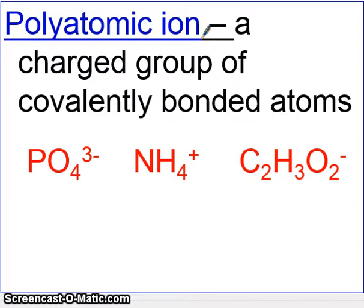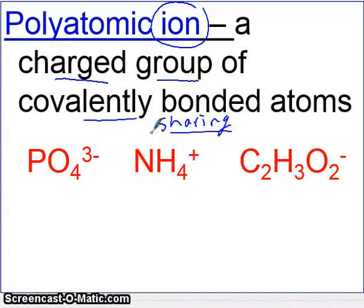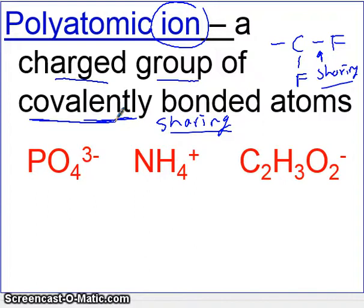Polyatomic ions are actually very common in chemistry. You can find a bunch of these in the chemicals in your house. Polyatomic ions are a charged group of covalently bonded atoms. Charged refers to the ion - ions have a charge, either positive or negative. Covalently bonded means they are sharing electrons. This is almost like mixing ionic and covalent compounds.